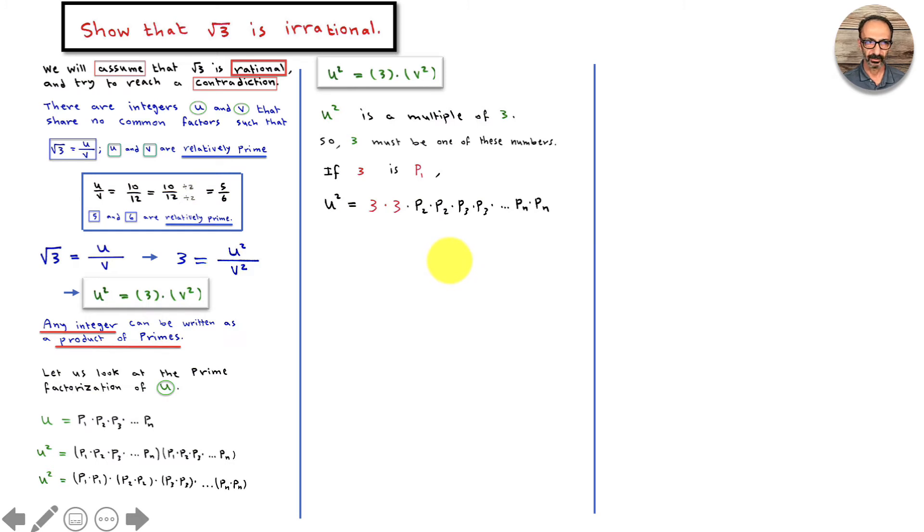Which means also that u by itself is 3 multiplied by p2 times p3 times all the way to p sub n.